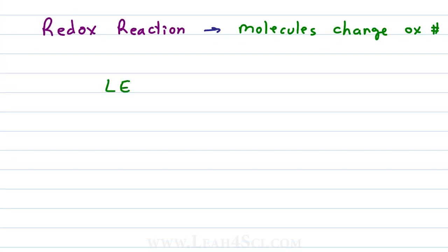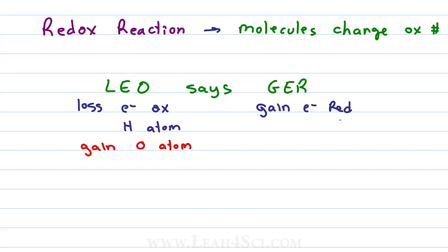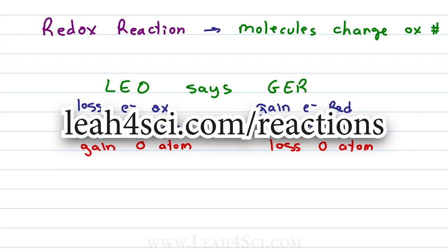First a quick review of my favorite mnemonic, Leo the lion says GRR and this tells us a loss of electrons is oxidation, a gain of electrons is reduction. Where loss of electron can also mean loss of hydrogen or gain of oxygen atom and gain of electron can also be gain of hydrogen or loss of oxygen atom. For more details on this, see the oxidation number video linked below or visit my website leah4sci.com/reactions.